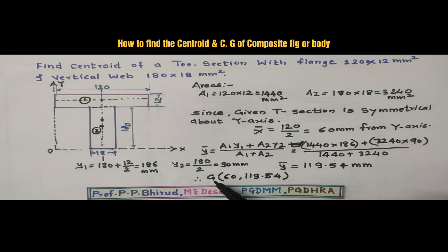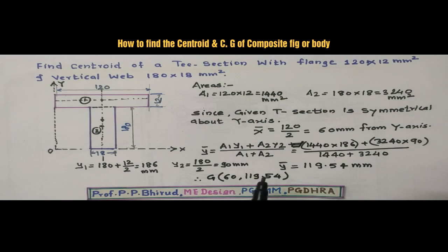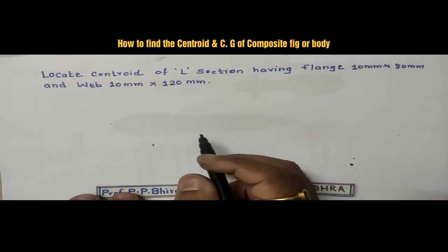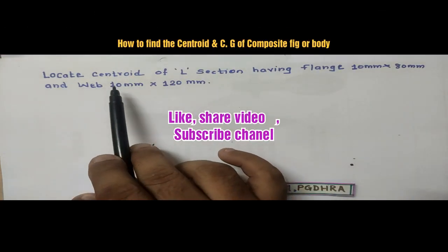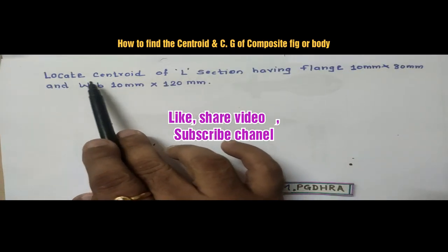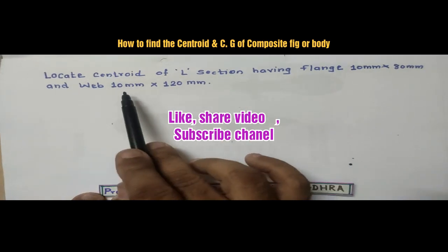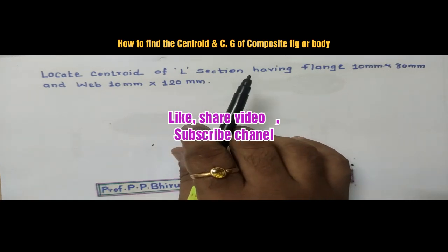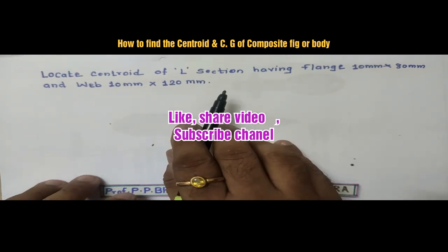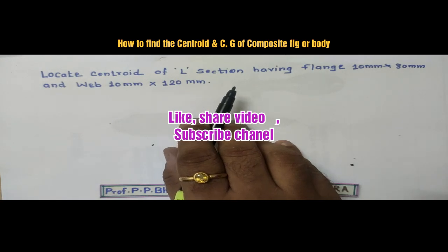This type of question or numerical is asked for four marks. If you really learned from this video, kindly subscribe to our channel, like this video, and share it with your friends. In the next video, we will solve one numerical of the L-section: locate the centroid of an L-section having flange 10 mm by 80 mm and web 10 mm by 120 mm. Keep watching our videos. Be with us. Stay at home, study at home. Thank you very much.